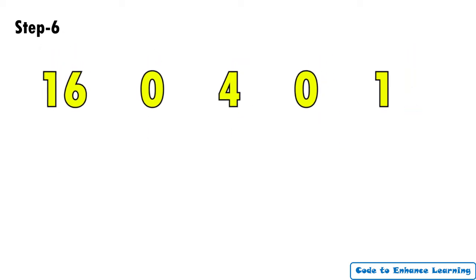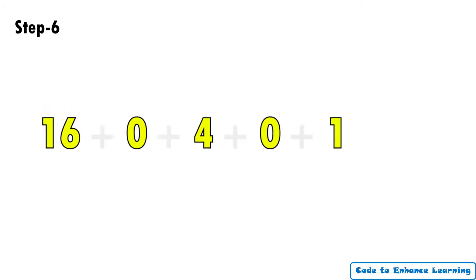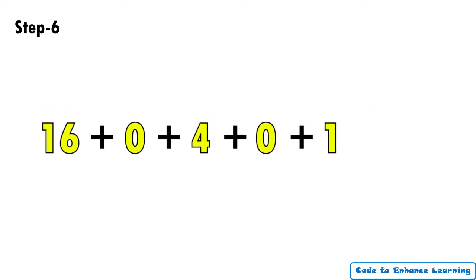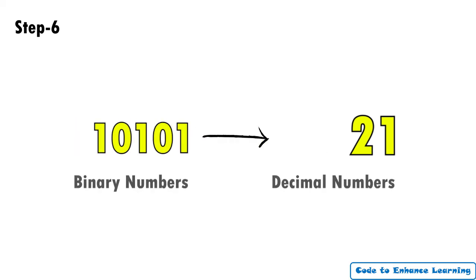In the last step, we add the multiplied numbers. This will be 16 plus 0 plus 4 plus 0 plus 1 which equals to 21. Thus, we get binary number 10101 is equal to the decimal number 21. Let's try the method with one more example as shown on the screen.